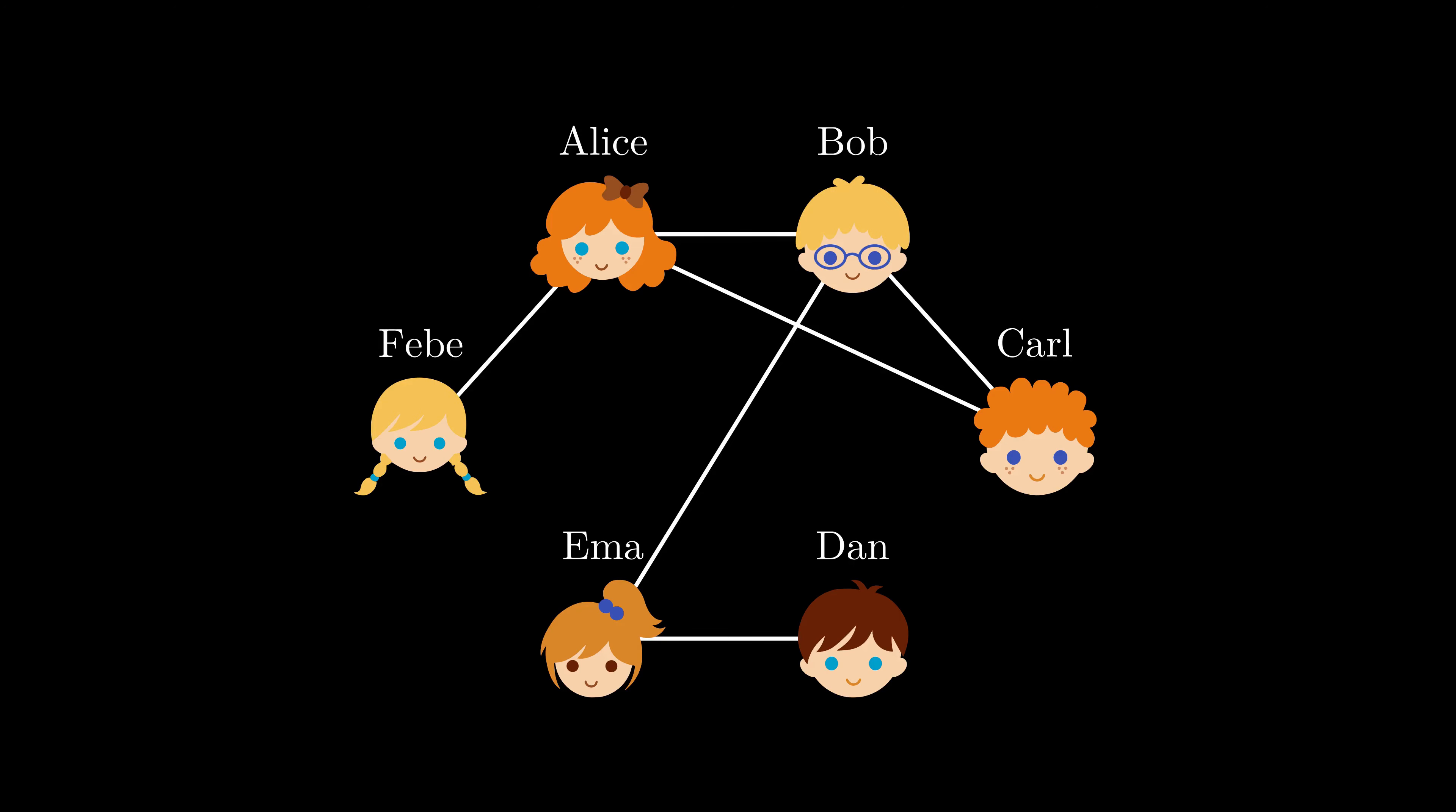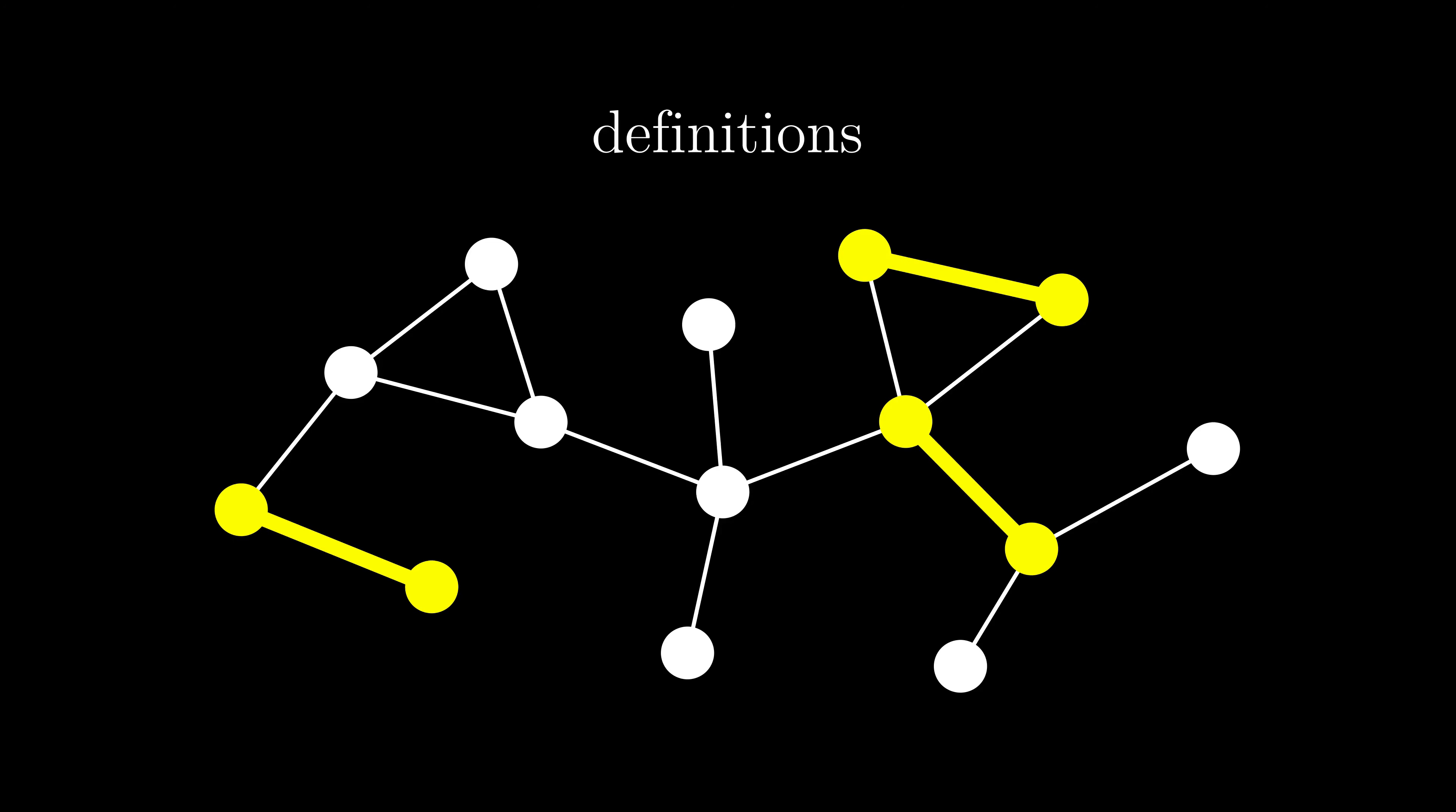Formally, a graph consists of vertices connected by edges. A matching in a graph is a subset of edges, such that no two share a vertex. A matching is maximum if it contains the most edges possible compared to other matchings for the given one.